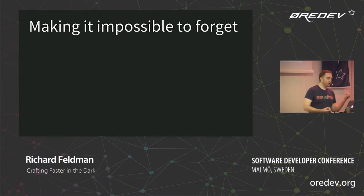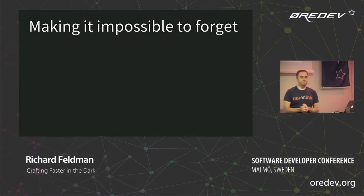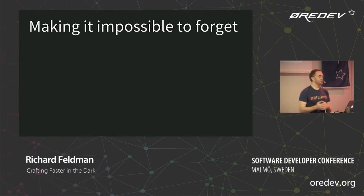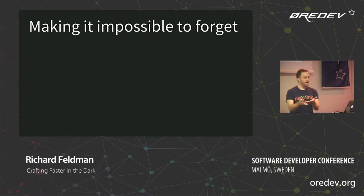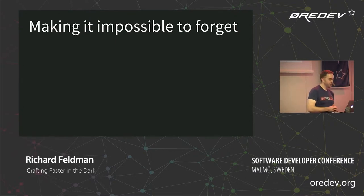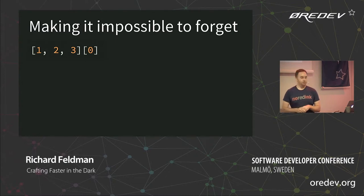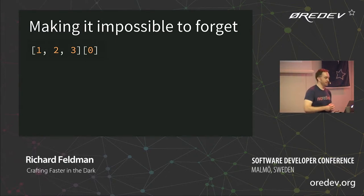You might say: what about null pointer exceptions? Surely at least you get NPEs — that's like part of programming. But as we saw in the live coding, the compiler just makes it impossible for me to forget things. The missing patterns error was basically saying: hey, you defined a new thing, you need to handle that everywhere. It wouldn't let me forget that. So here's an example of how Elm handles null pointer errors and makes them impossible to forget.